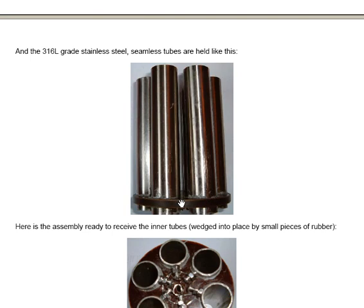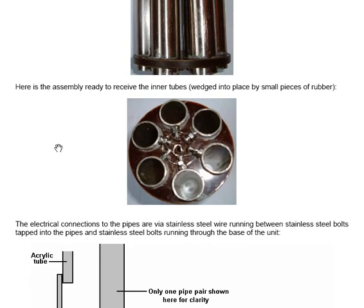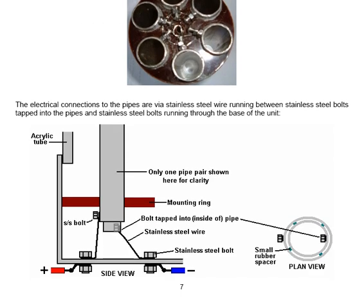Here's the assembly ready to receive the inner tubes. The inner tubes are wedged in place by small pieces of rubber. The electrical connections of the pipes are via stainless steel wire running between stainless steel bolts tapped into the pipe and stainless steel bolts running through the base of the unit.